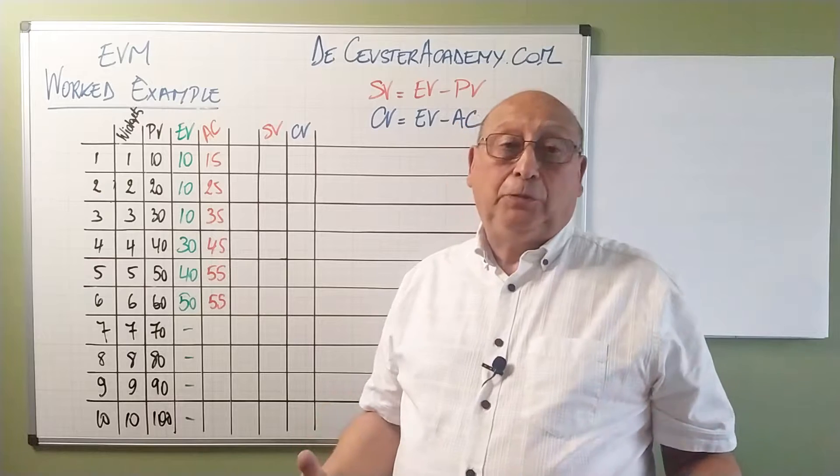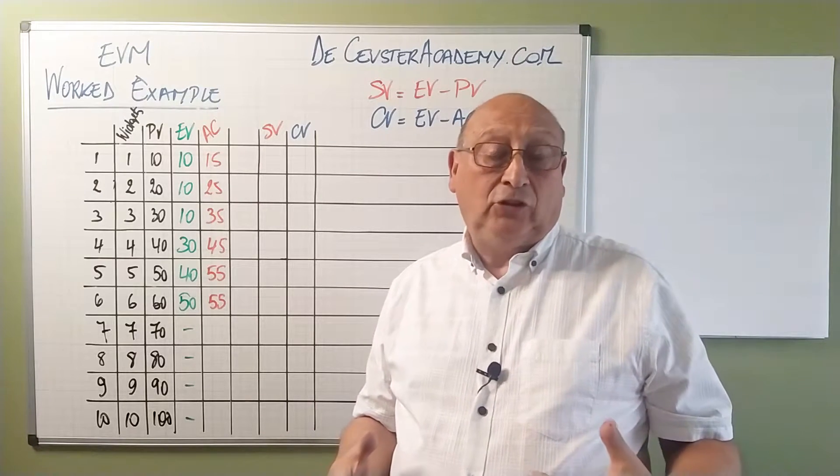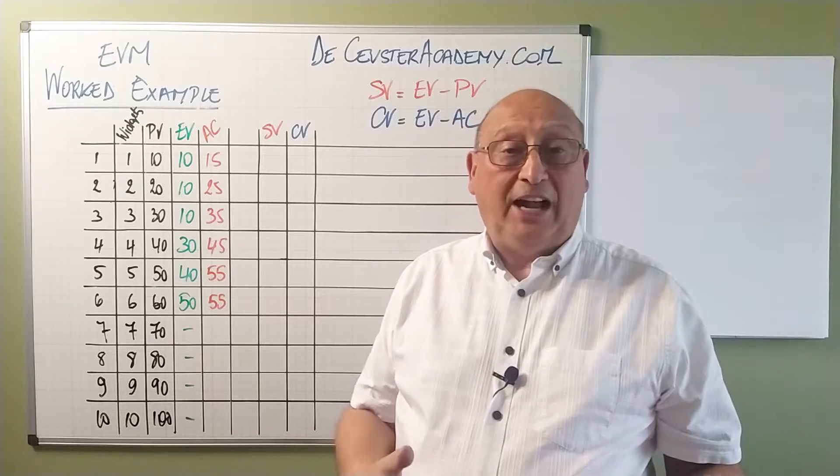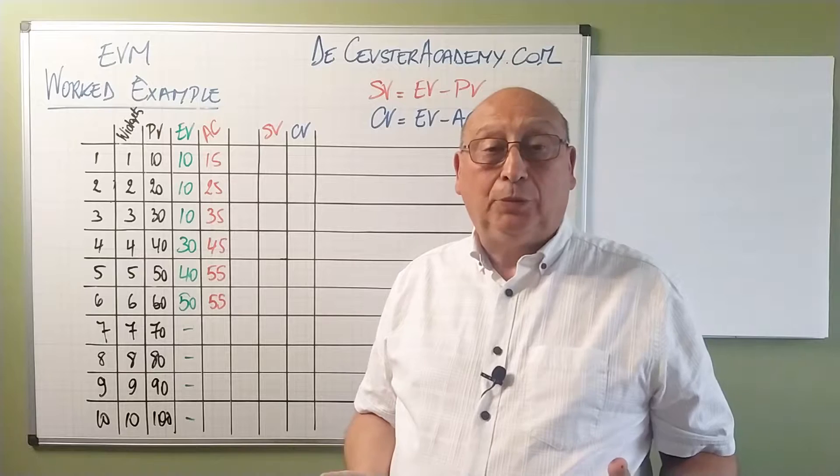We have seen the first parameters of earned value management which are how we find earned value, how we find the planned value, and how we find the actual cost.